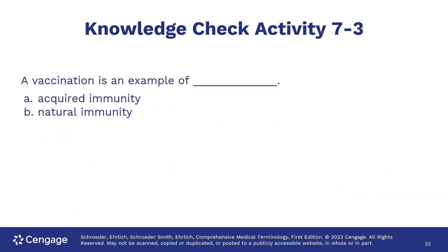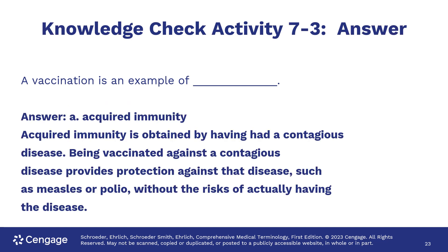What kind of immunity does a vaccination give you? Acquired — because you acquire it through a vaccination.